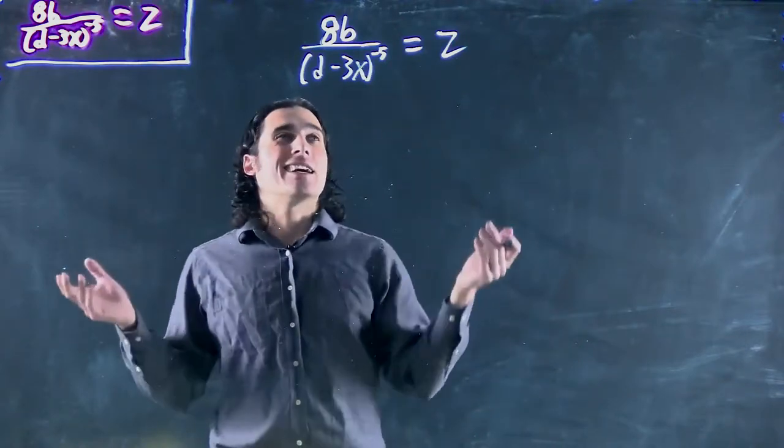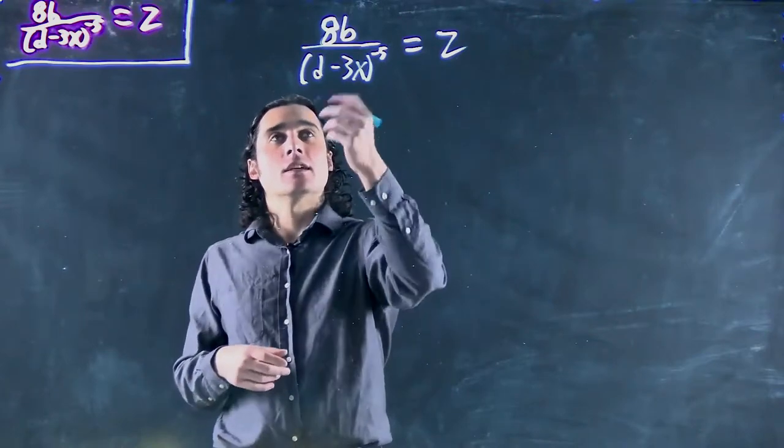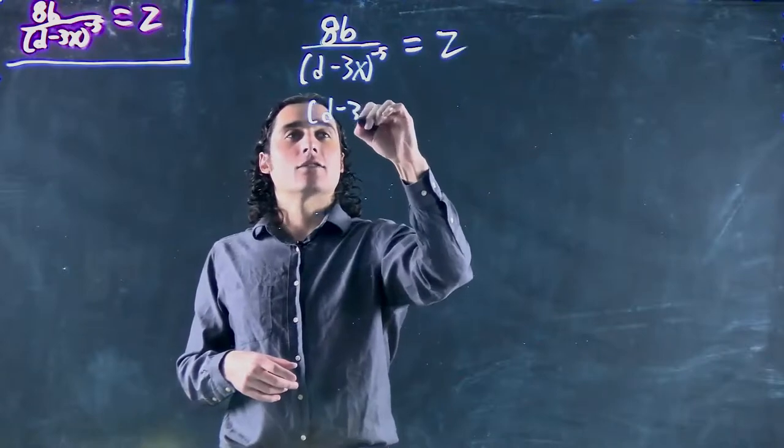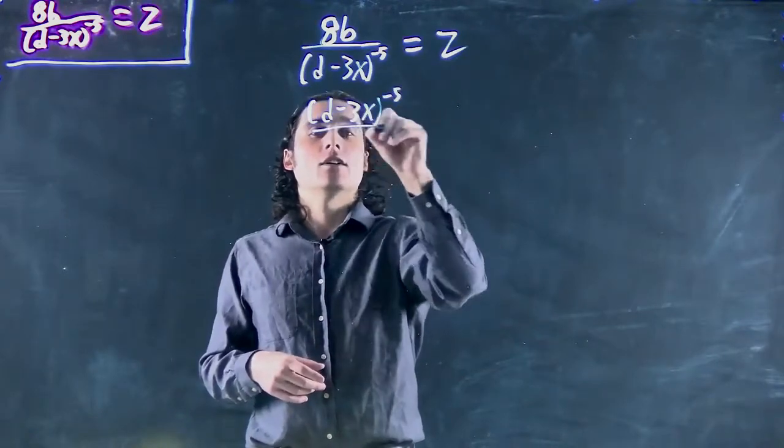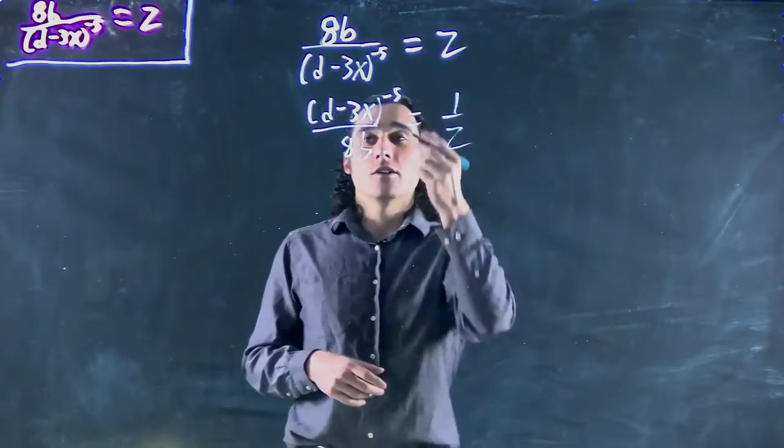Okay, well again, the easiest thing to do is to flip both sides. In this case we get (d - 3x) to the minus 5 divided by 8b equals 1 over z.